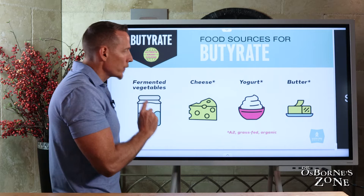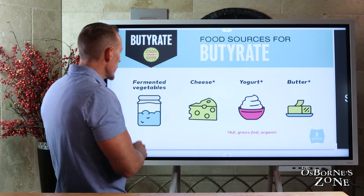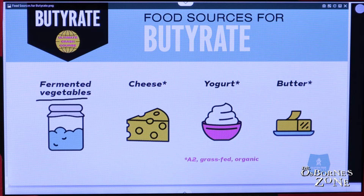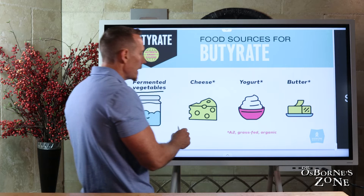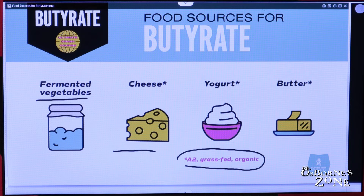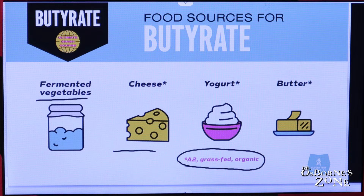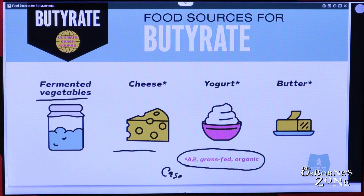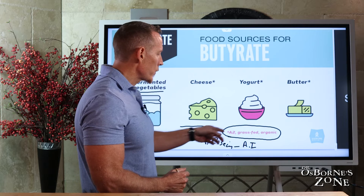Food sources of butyrate include fermented vegetables — sauerkraut, fermented cabbage, cauliflower, and carrots — and dairy products like cheese and yogurt. If you're going to use dairy, my advice is to stick to A2, grass-fed, organic. Otherwise, you risk pesticide exposures and reactions to non-A2 casein. A1 casein has been linked to autoimmune illness. If you haven't watched the crash course on dairy as a trigger for autoimmune disease, check it out to understand the differences between A1 and A2 milk.